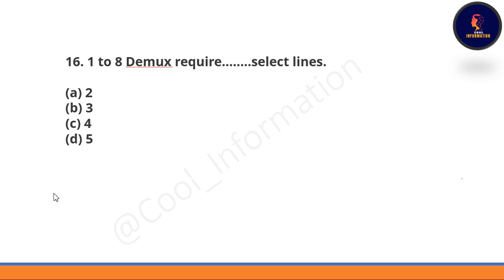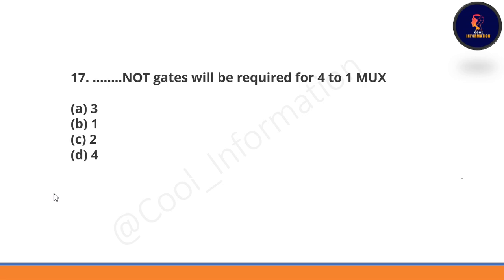Next question: A 1-to-8 demultiplexer requires how many select lines? Options: 2, 3, 4, or 5. The correct option is 3, because 2 raised to the power 3 equals 8, so 3 select lines are needed. Next question: How many NOT gates are required for a 4-to-1 multiplexer? Options: 3, 1, 2, or 4. The correct option is option C — 2 NOT gates are required.